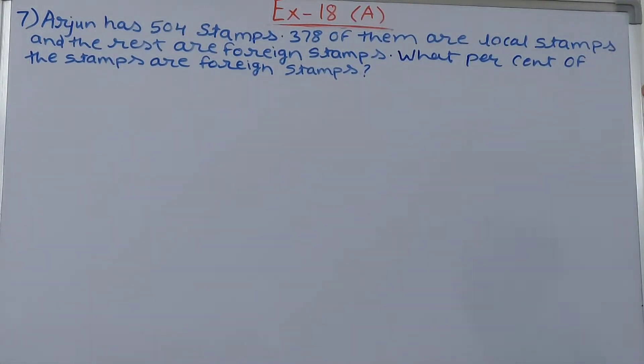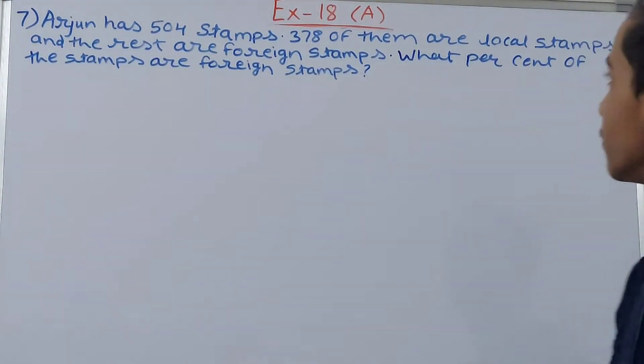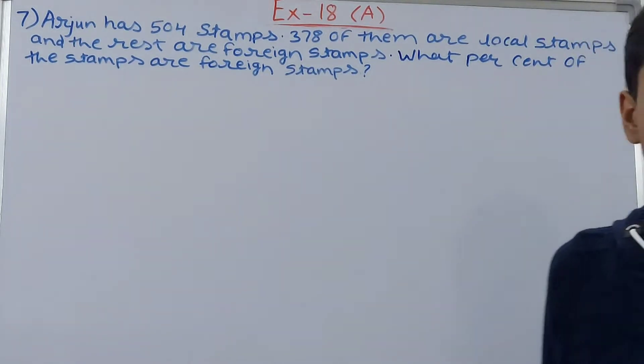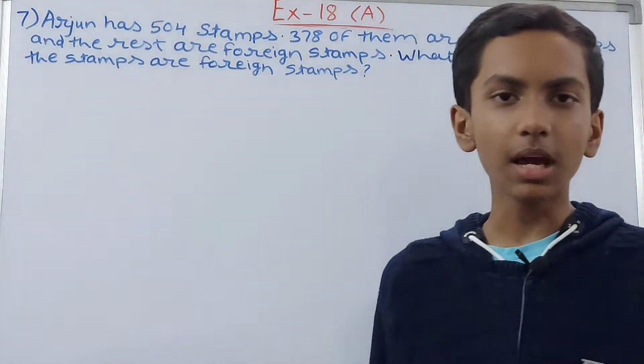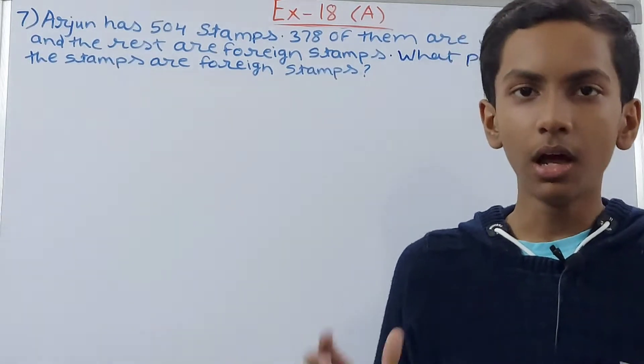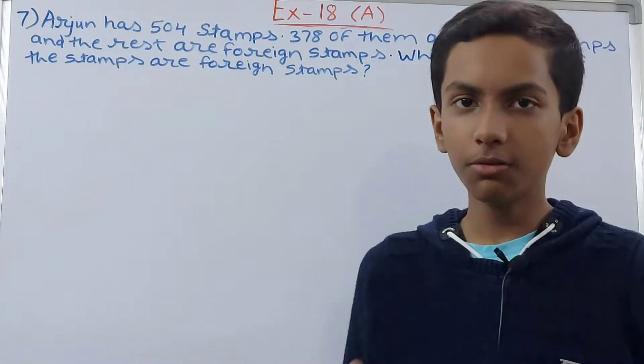378 of them are local stamps and the rest are foreign stamps. What percent of the stamps are foreign stamps? So he has 504 stamps in total, out of which 378 are local stamps and the rest are foreign stamps.